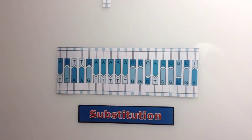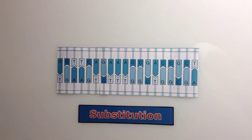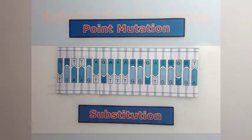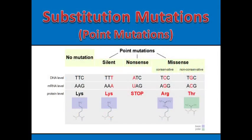During a substitution, a single base pair is replaced. This is also called a point mutation. Substitution mutations can have a wide range of effects on the amino acid sequence of a protein, depending on the location and nature of the substitution.